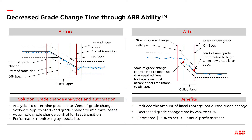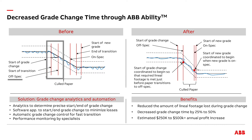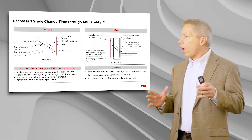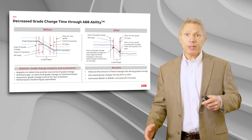From a grade change point of view, I think of it in three different parts. There's the beginning part — from when an operator starts the grade change to the time the targets actually start to change, which is a transport delay time. Between the second and third line is when the transition actually starts, but the paper is still on-spec — it's actually good paper. So until it gets off-spec, the paper is good. Then the transition happens, and the fourth vertical line is where the paper is on-spec on the new grade for the first time. During all of this time, paper is called or rejected — and actually a lot of it is good paper.